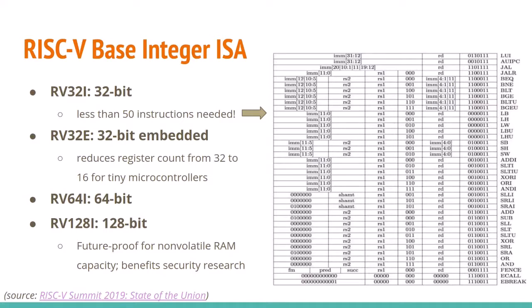There are four base integer instruction sets. The first is RV32I, which is 32-bit with fewer than 50 instructions — much smaller than x86 or ARMv8. There's also an embedded variant with a smaller number of registers. The more common one will be RV64I, which is 64-bit integer. There's even 128-bit, which might seem silly, but the designers' experience was that you can never have enough address space. With non-volatile RAM capacities increasing, we may need that sooner rather than later, and it's also beneficial for security.